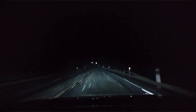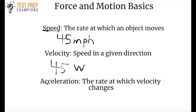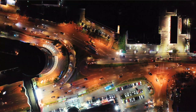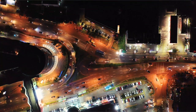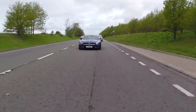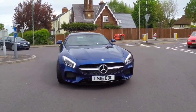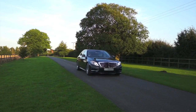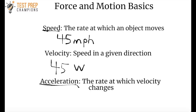Again, velocity is speed in a given direction. We also have to talk about acceleration. Acceleration is the rate at which velocity changes. So let's say you're in the city and as you come to a yellow light, you press the gas pedal down and try to accelerate through the light before it turns red — that's an example of acceleration. Changing speed is acceleration, and it could also be changing direction, such as taking a right or left turn or reversing the car.